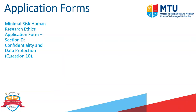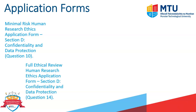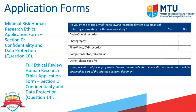Then later on in the application form — in question 10 for the minimal risk and question 14 for the full ethical review human research ethics application form respectively — there is a section where you specify what recording device you are going to be using to collect your data. So will you be collecting the data using audio or sound, photography, videography related devices, computer, laptop, tablet, iPad, or other? Whichever one you select, you'd state at the bottom part of the table how you're obtaining permission from your participants to do that — outlining what method you're using to actually record the information.